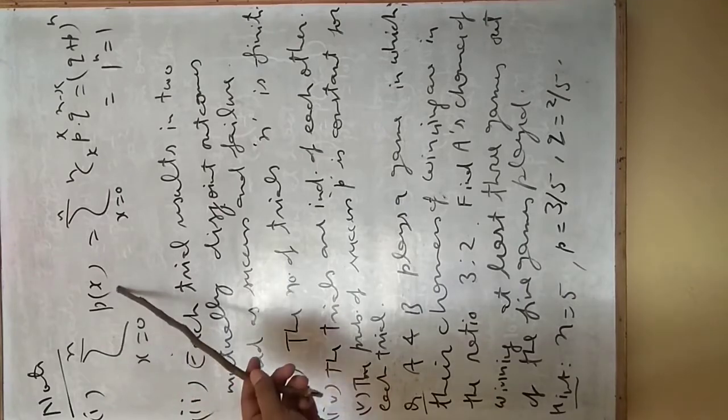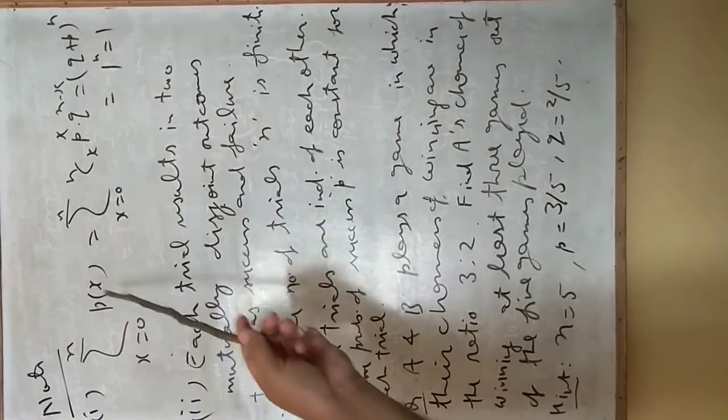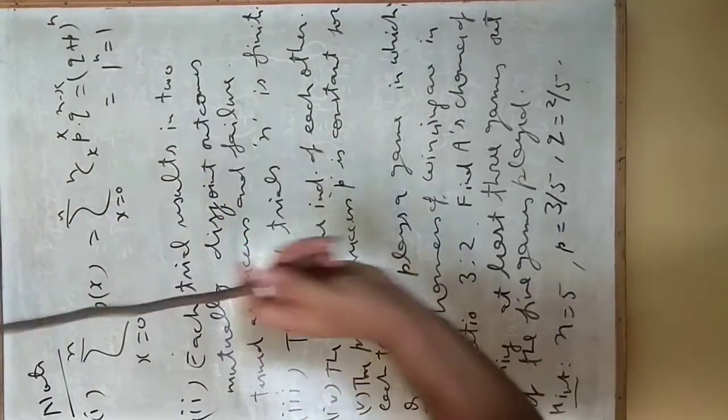Important points to be remembered: first, summation x equals 0 to n of p(x) equals summation x equals 0 to n of nCx times p to the power x times q to the power n minus x.